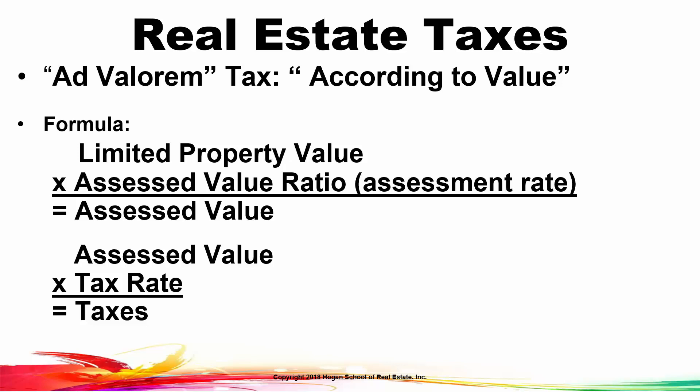In some of the math problems you might encounter, they might not refer to it as limited property value, but just give you a value. The assessed value ratios in Arizona are based on property class or classification. Residential property is assessed at 10% of value, vacant land at 15%, and commercial property at 18%.